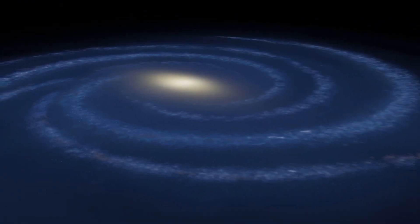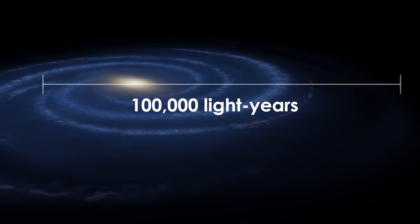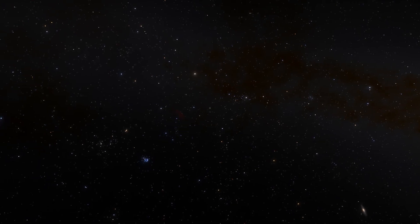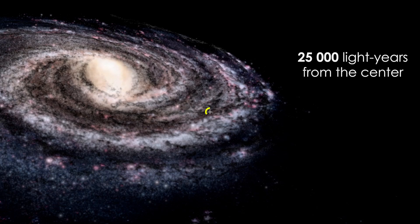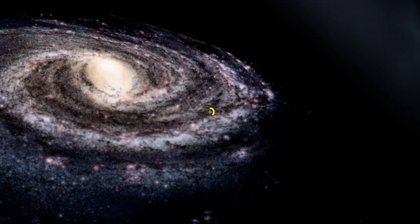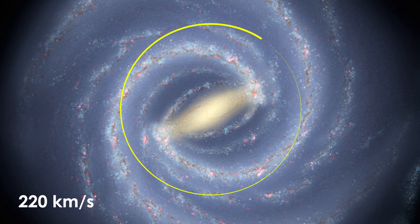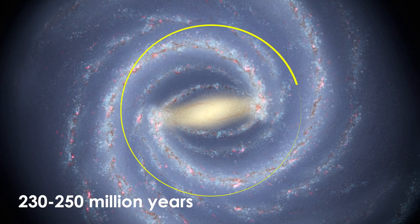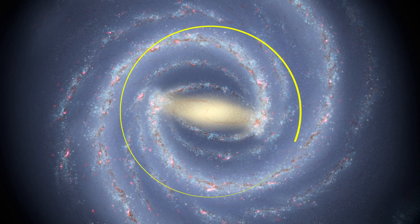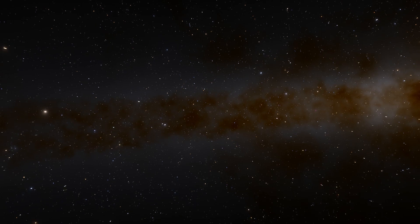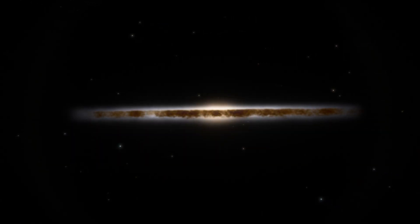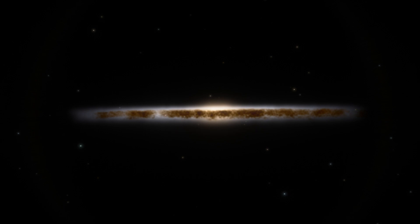Today we know that the Milky Way's disk spans an astounding 100,000 light-years of mostly empty space, but within it are hundreds of billions of stars and other fascinating forms of normal matter. The solar system is about 25,000 light-years from the center of the galaxy, meaning we are approximately equidistant from the center and the edge. Moving around the core of the Milky Way at a speed of 220 kilometers per second, it takes our star between 230 and 250 million years to complete one full orbit. Thus, since its birth, the Sun has already made over two dozen of its galactic orbits. Within the disk, which is about a thousand light-years thick, our stellar system is situated very close to the galactic equator.